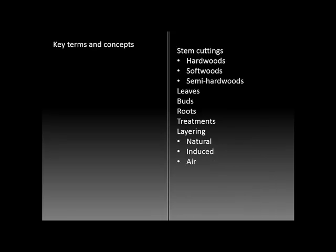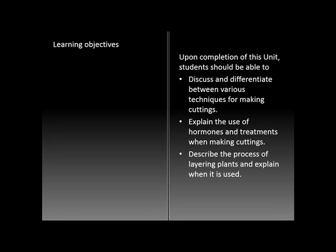There are some key terms and concepts that provide an overview of the range of techniques available for propagating additional plants by use of various types of cuttings or layering techniques. At the end of this unit you should be able to differentiate between the different techniques for making cuttings, explain the use of hormones and other treatments that will increase the success of the plants derived from these techniques, and be able to explain layering and when it is a useful technique.